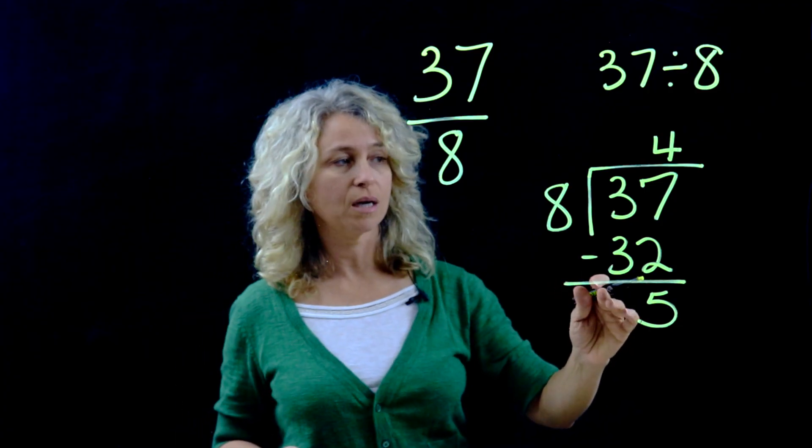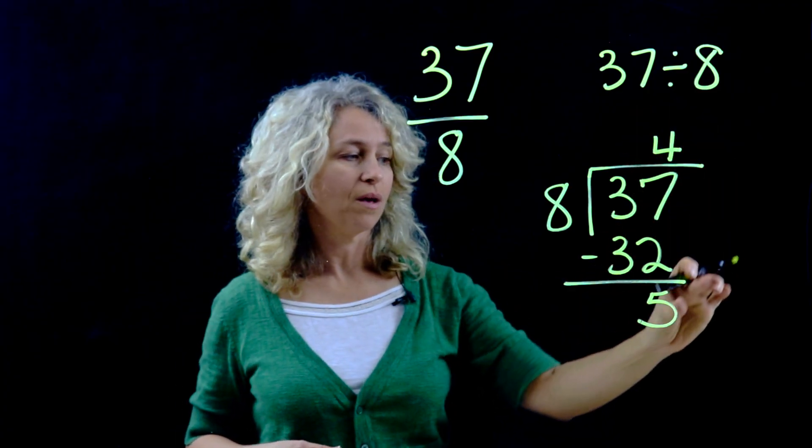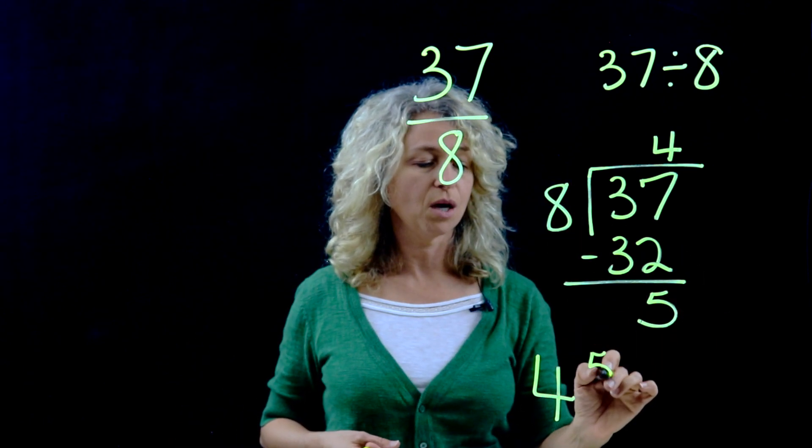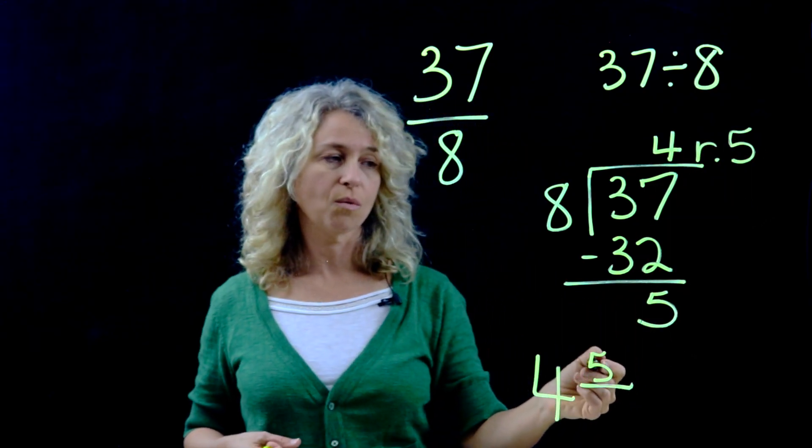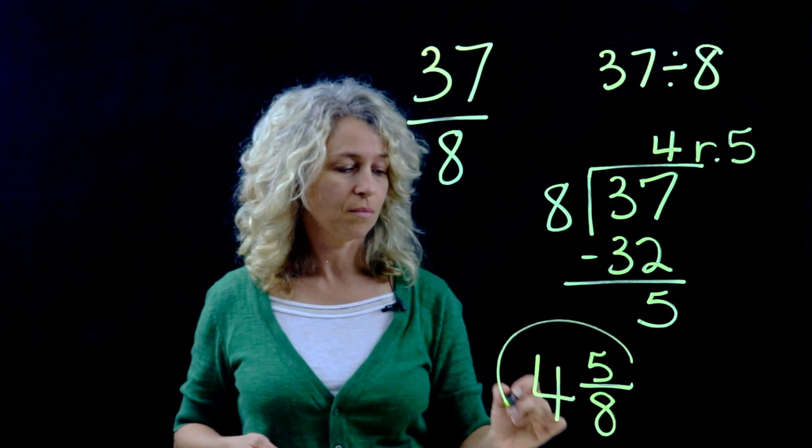And here's where I was saying on this last example, when you get quick at this, you're going to say 4 and 5/8 is your final answer, because you know 5 was your remainder and it becomes the numerator, and 8 is your denominator. Okay?